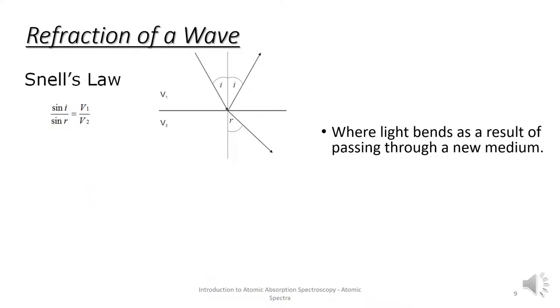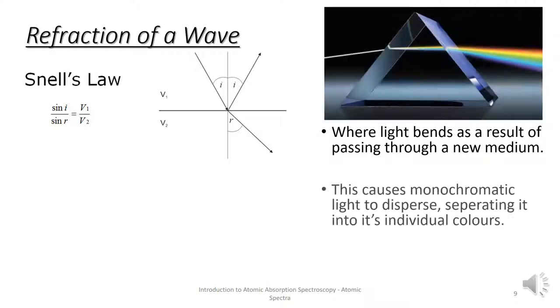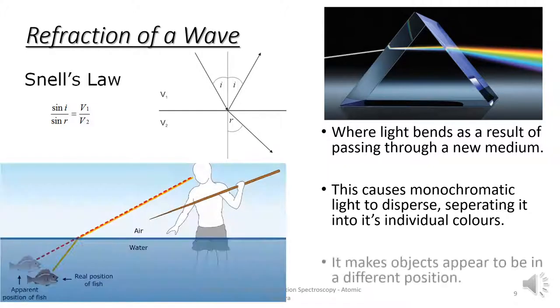Refraction of a wave is where light bends as a result of passing through a new medium. For example, if light is traveling through air and it hits water, it's going to bend. This causes monochromatic or white light to disperse, separating it into its individual colors. This is why we see a rainbow after rain. It makes objects appear to be in a different position.